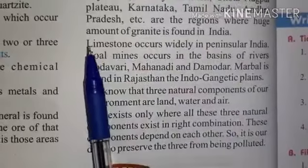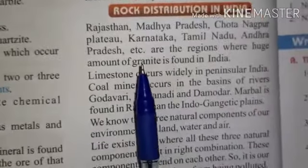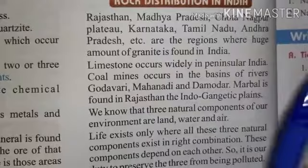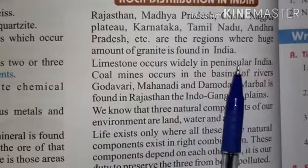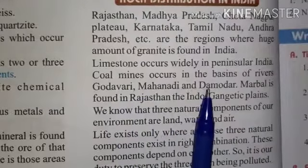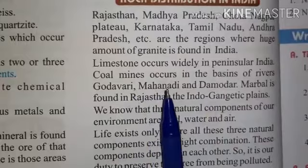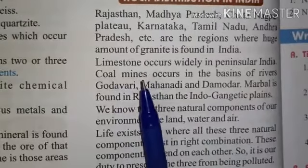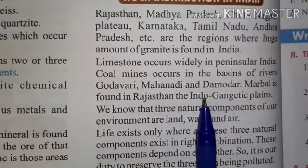Search for pictures of granite, limestone, and also igneous, metamorphic, and sedimentary rocks. Limestone widely occurs in Peninsular India and South India. Coal mines occur in the basins of rivers Godavari, Mahanadi, and Damodar. Marbles are found in Rajasthan and the Indo-Gangetic plains.